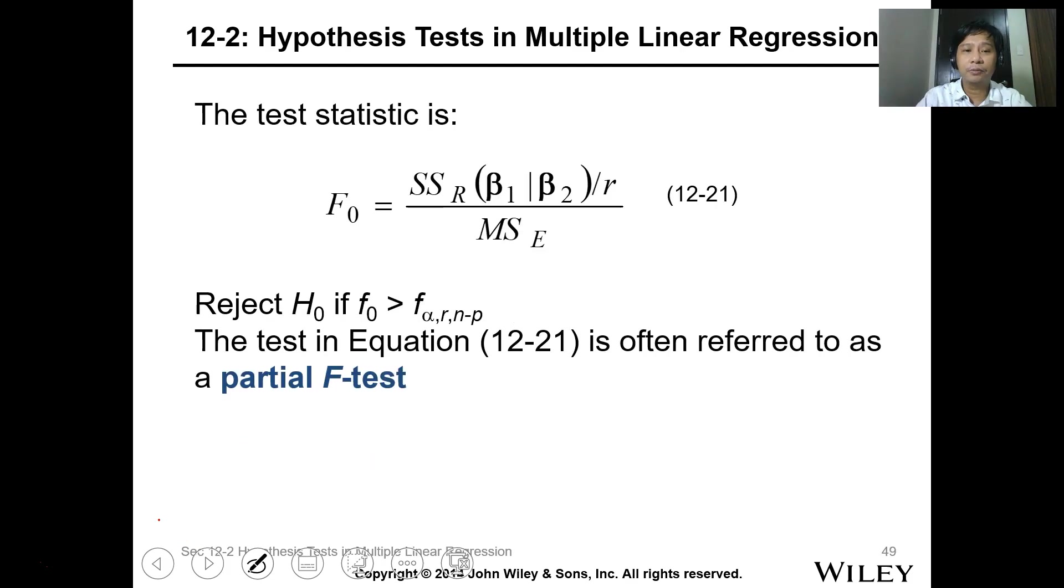The test equation is often referred to as the partial F-test. So we just test if there's another variable and it's already proven that the previous variables are already linear in terms of the regression model.